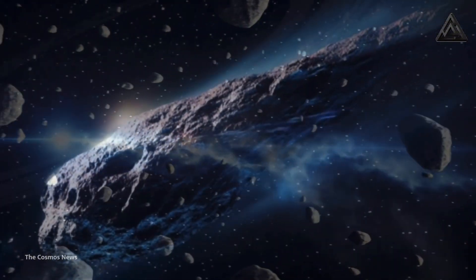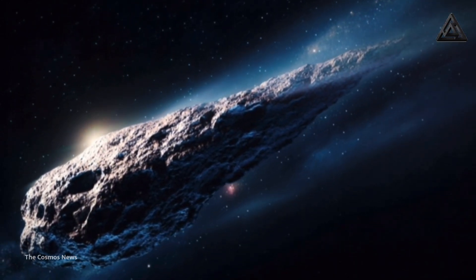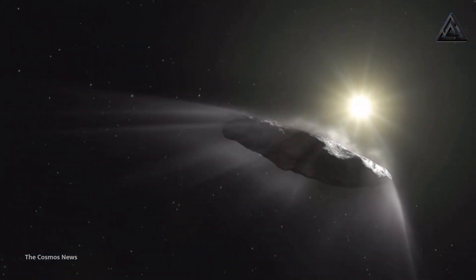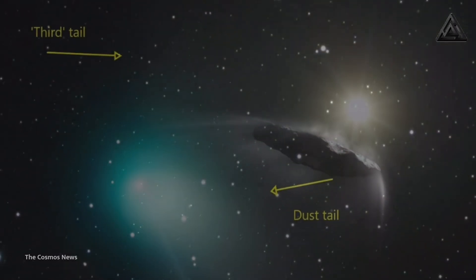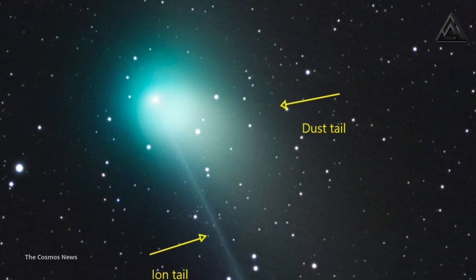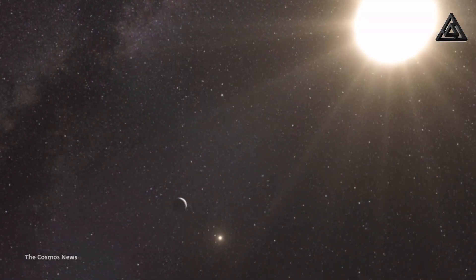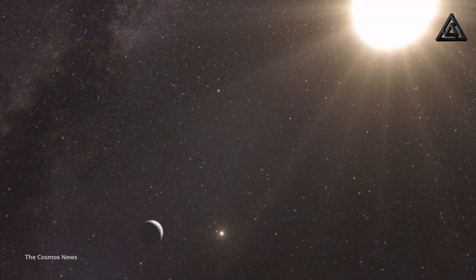Other experts are firmly in the camp that this object is a comet from another star system, and that the unusual features reflect its different origin, history, and composition. Whatever the case, the composition of 3i Atlas and its behavior give astronomers clues about the kinds of materials and processes that might exist in distant star systems.